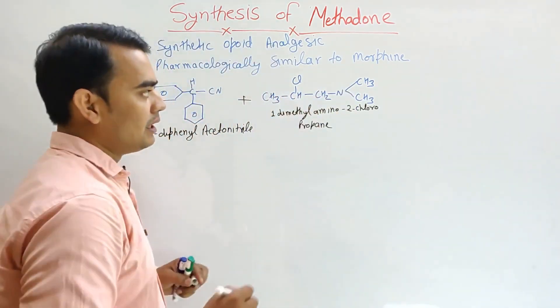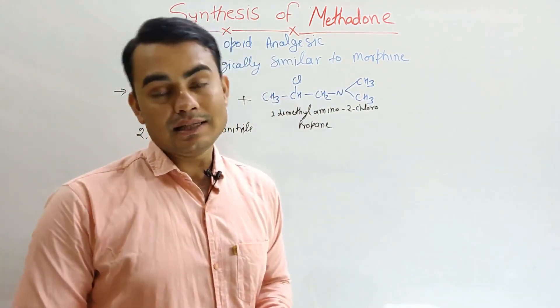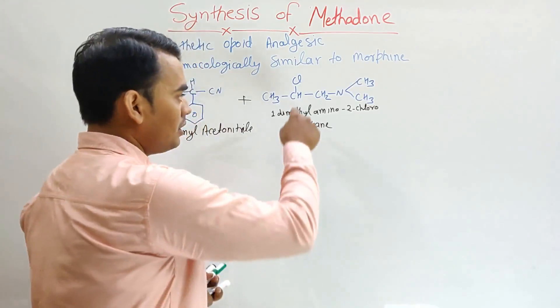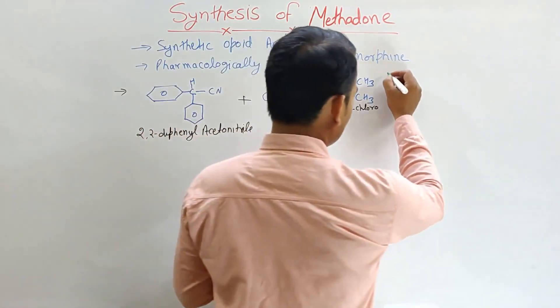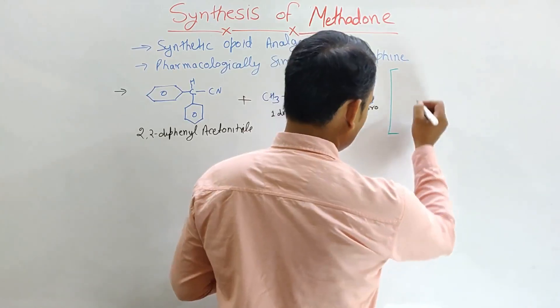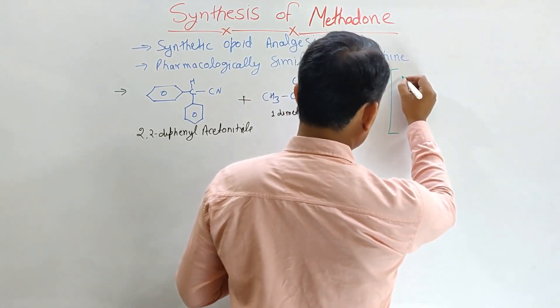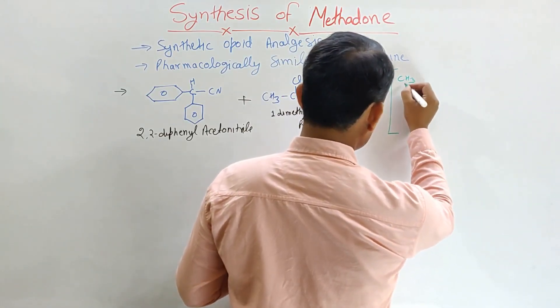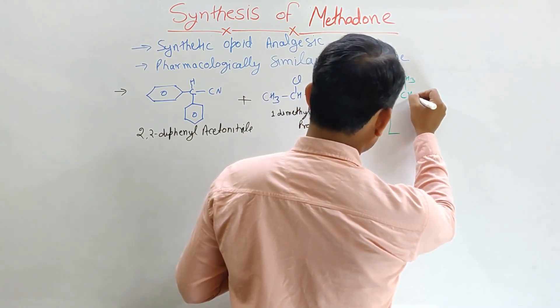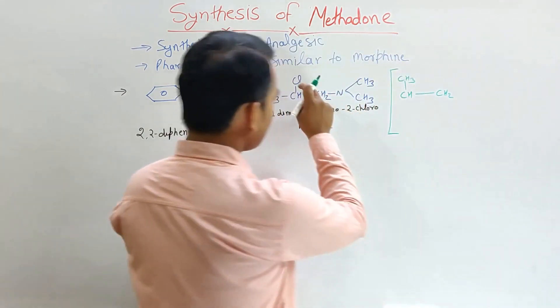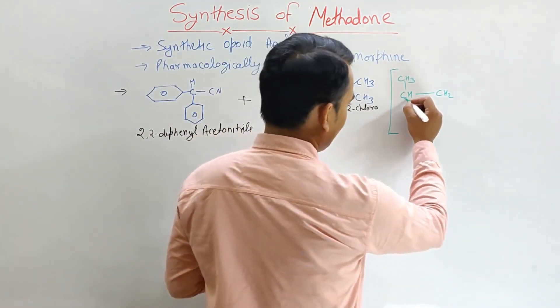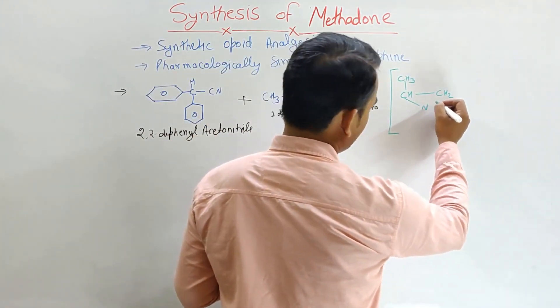This compound mainly exists in the cyclic form. The structure of cyclic form of this compound is like this: CH3, CH, CH2. This CH, chlorine will be removed here, and here is the nitrogen.